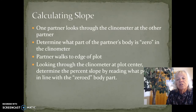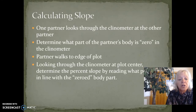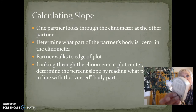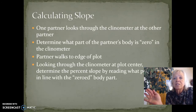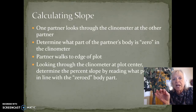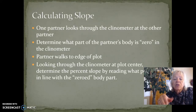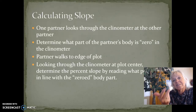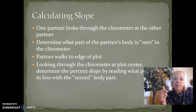We'll also learn how to calculate slope, and that is done by looking at your partner through the clinometer. Determine what part of the partner's body is zero, have them walk to the edge of the plot, and then zero in again — that percent is the percent slope. These are two things we'll practice in the field, not on this PowerPoint slide right now.